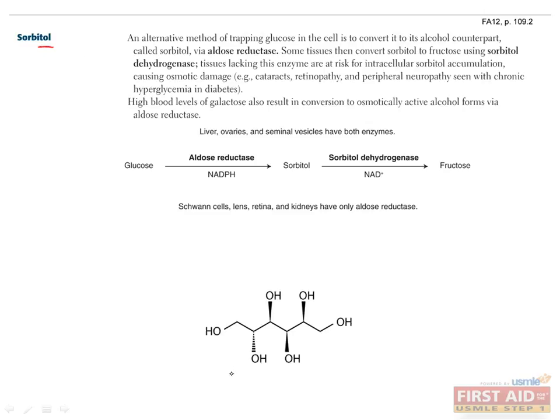Sorbitol, which is shown here, is basically a reduced alcohol form of glucose, which is formed by the enzyme aldose reductase. This should sound familiar, since this also converts galactose to galactitol, as I mentioned on the last slide. Sorbitol is formed to trap glucose inside cells and can later be converted to fructose by sorbitol dehydrogenase.